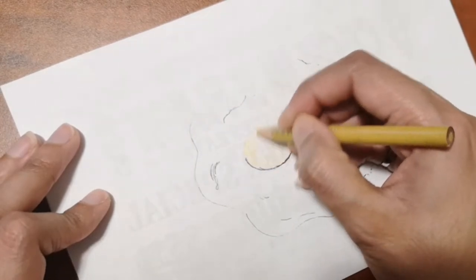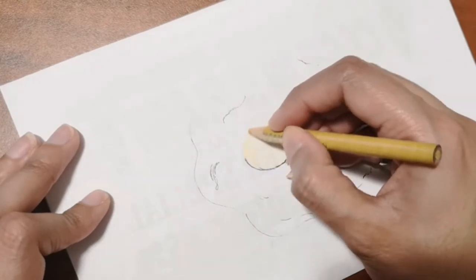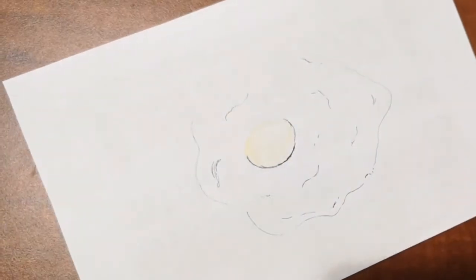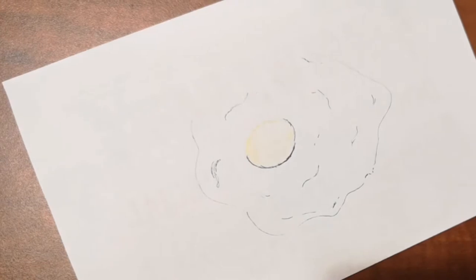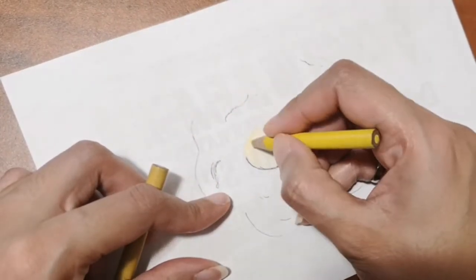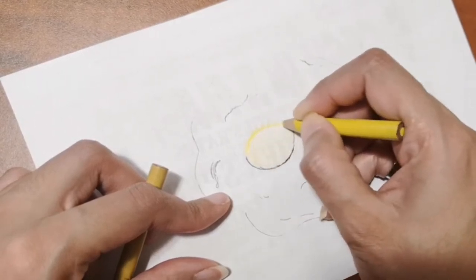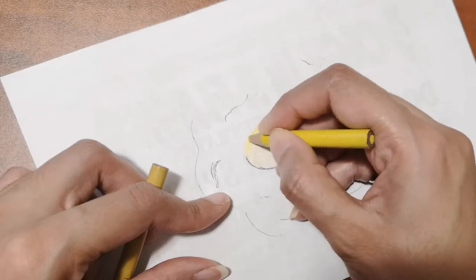I'm going to start with the egg yolk and then go to the rest of the egg. I'm starting off with a darker shade of yellow, and then I'll add some orange and yellow to the middle part here.